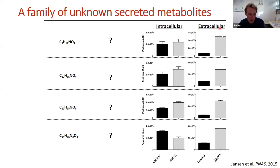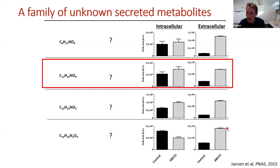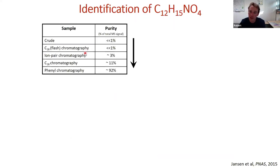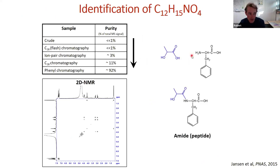The elemental composition was determined, intracellular levels were the same in both cell lines, but extracellularly it was exported by the transporter. There were actually several structurally similar metabolites — all transported out of the cell. With no library match, we went brute force: we collected several liters of culture medium supernatant, used multiple preparative HPLC steps to get a relatively pure preparation, and performed 2D NMR.